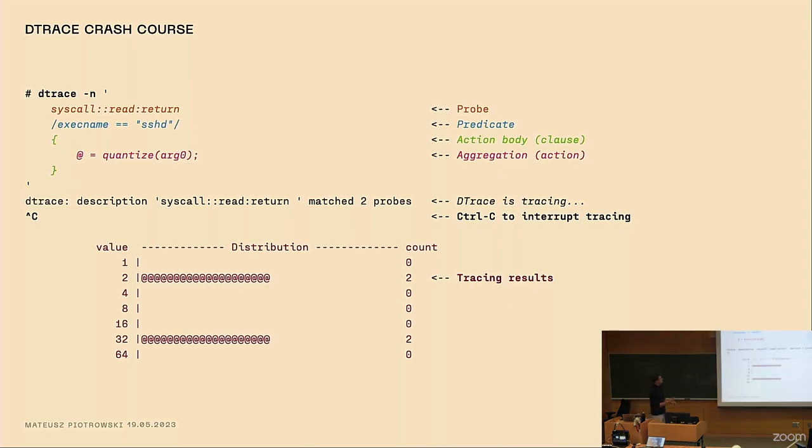So let's talk about tracers. We'll talk about DTrace and BPF trace. I'll give you a quick crash course on how they look like and how they behave. So this is a typical interaction you may have with DTrace.